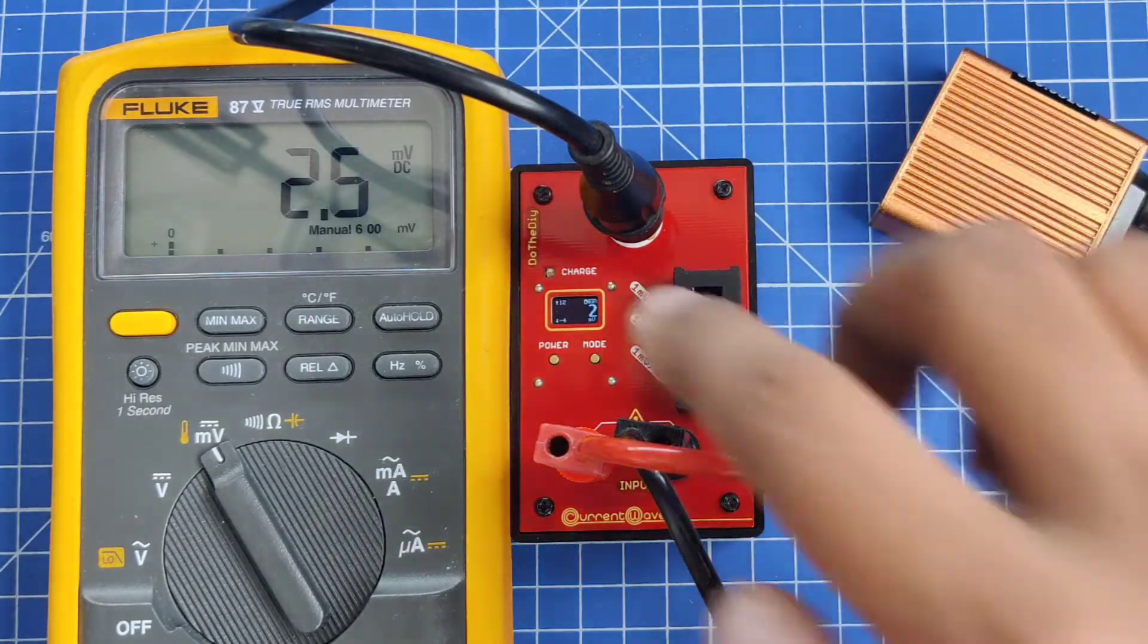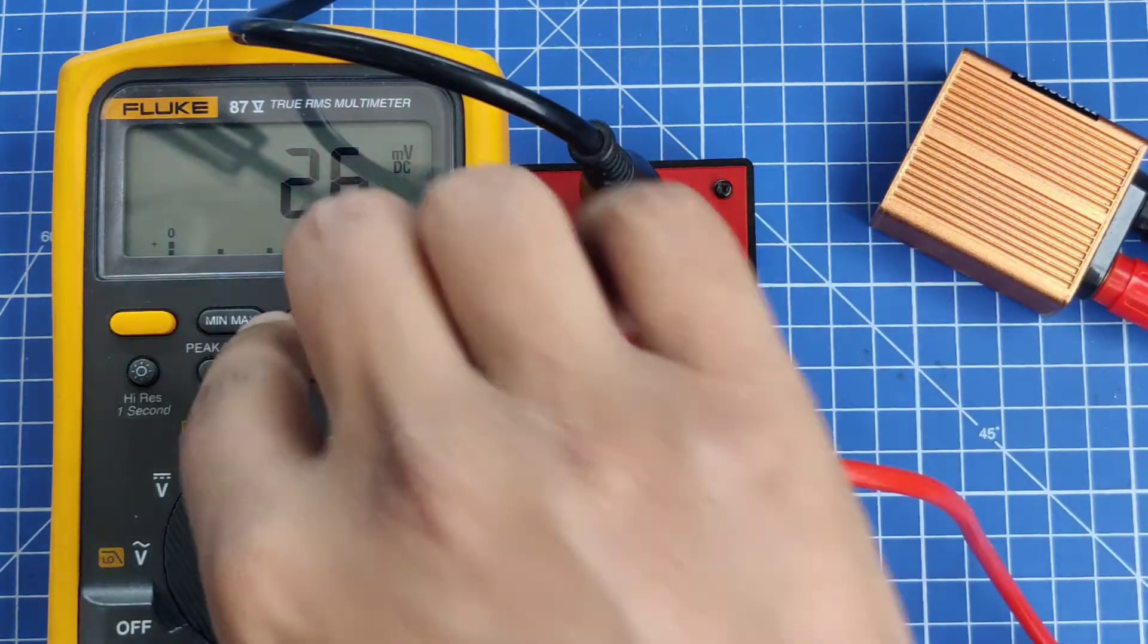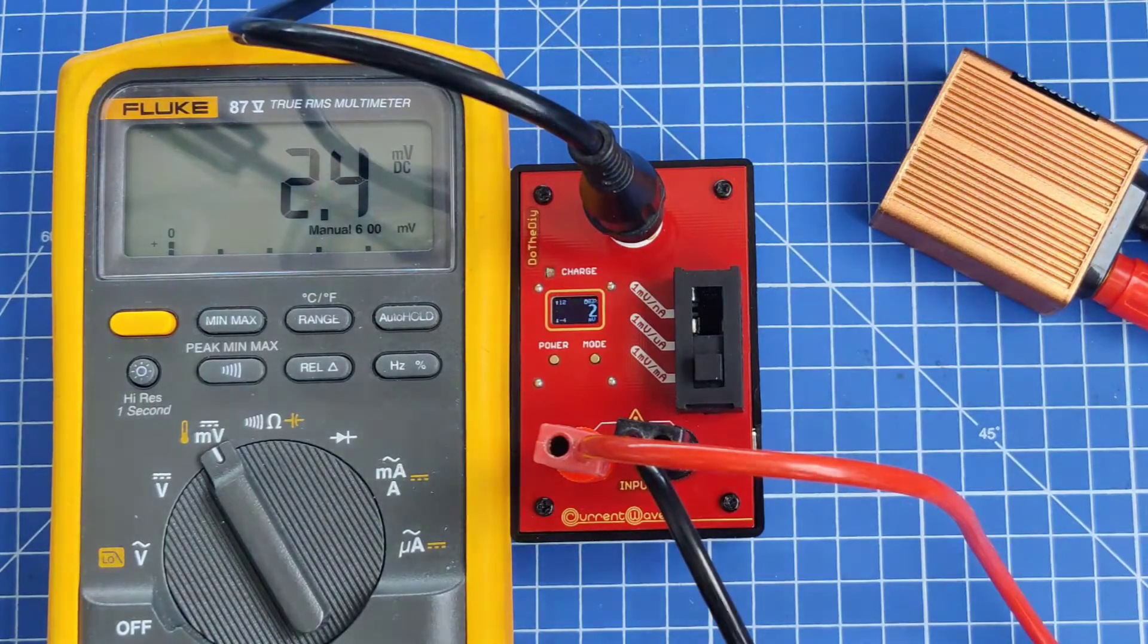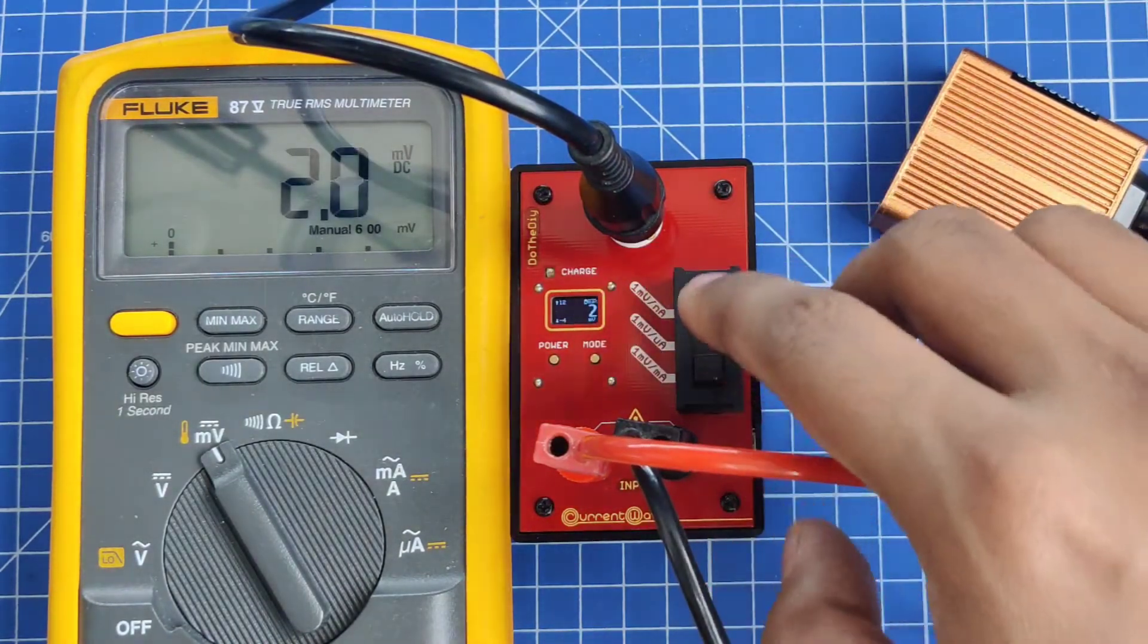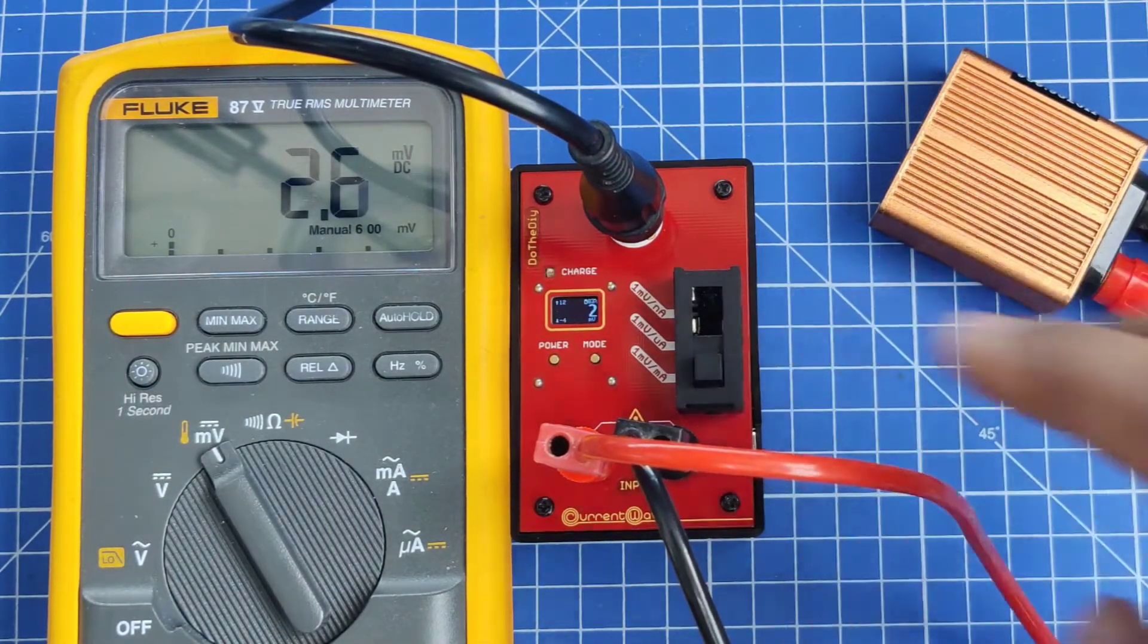You can see currently the device is reading as 2 and the DMM is showing as 2.6, so it means it's consuming around 2mA right now.